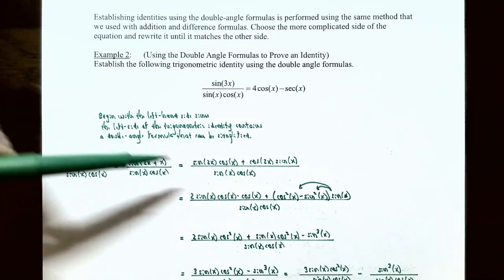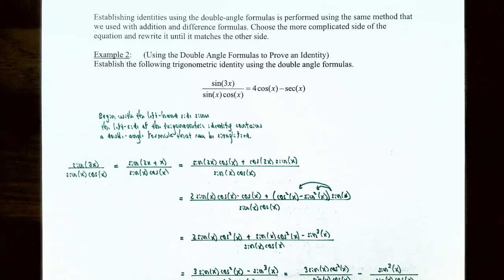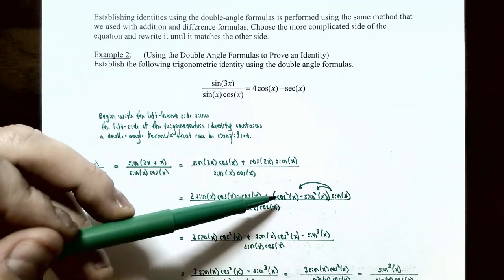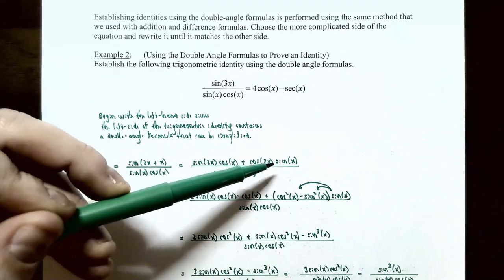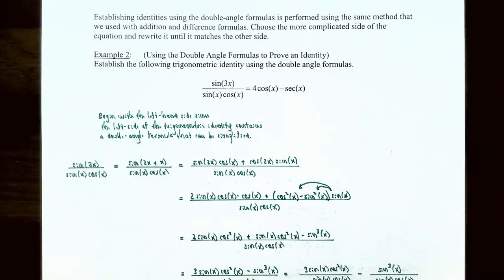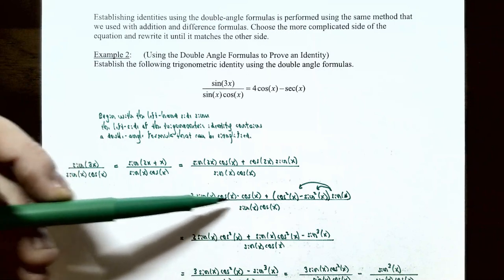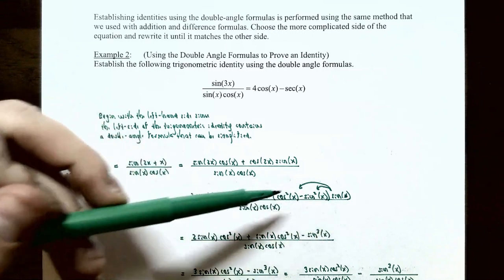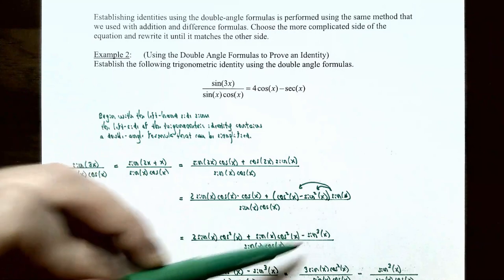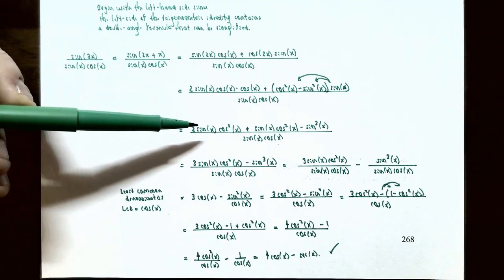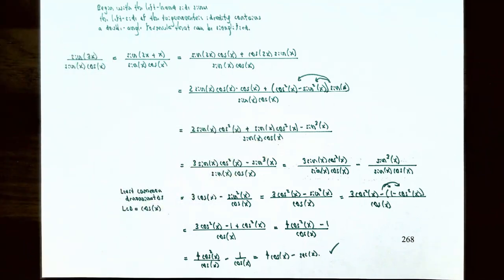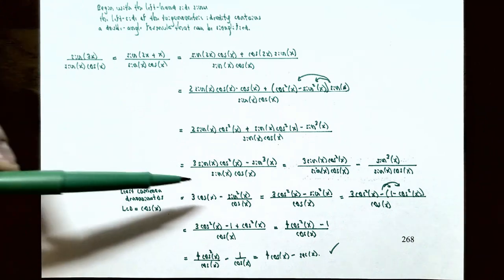Now applying the double angle formulas in the numerator: sine(2x) becomes 2 sine x cosine x, and cosine(2x) becomes cosine squared x minus sine squared x. After expanding and combining like terms in the numerator, we get 3 sine x cosine squared x minus sine cubed x, over sine x cosine x.